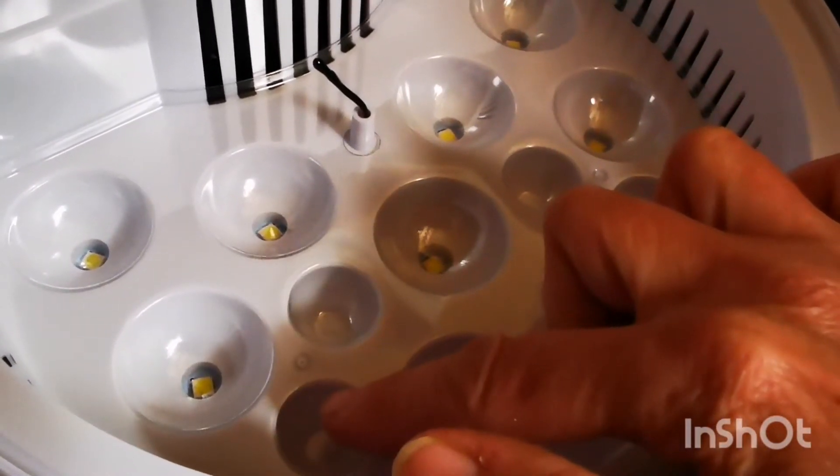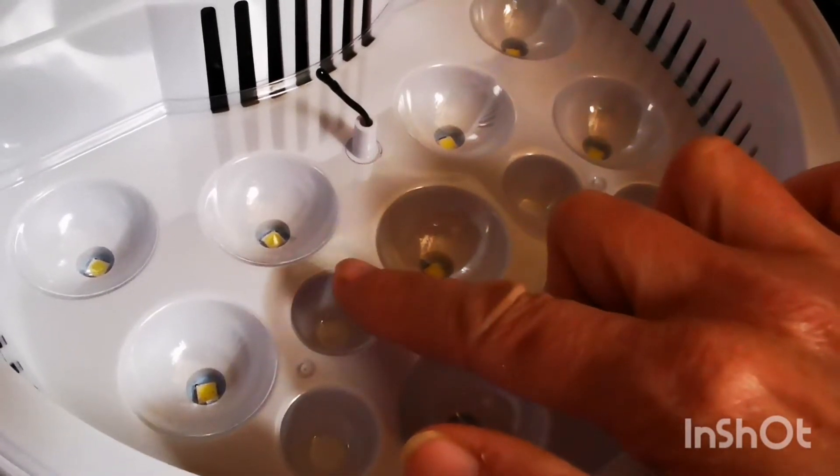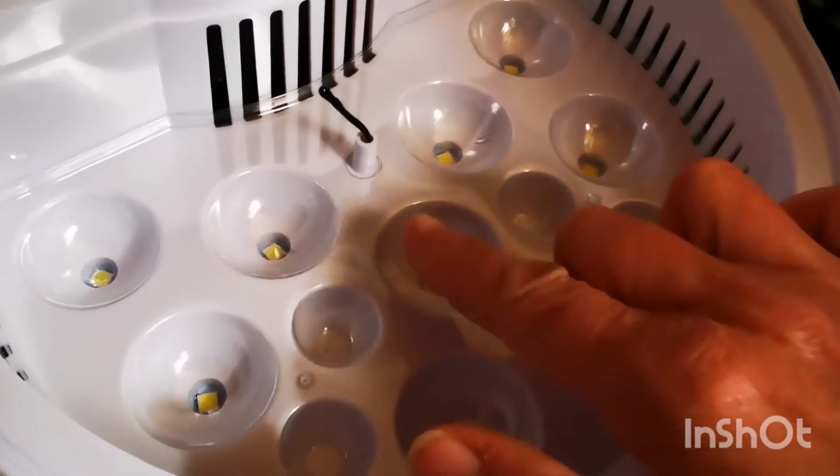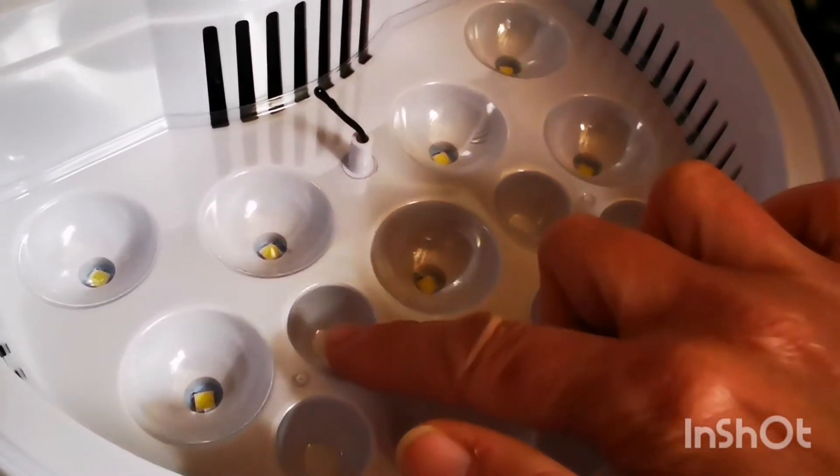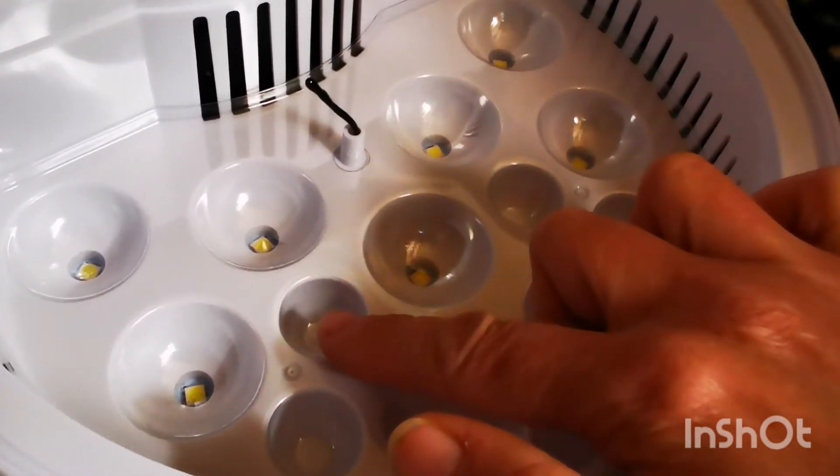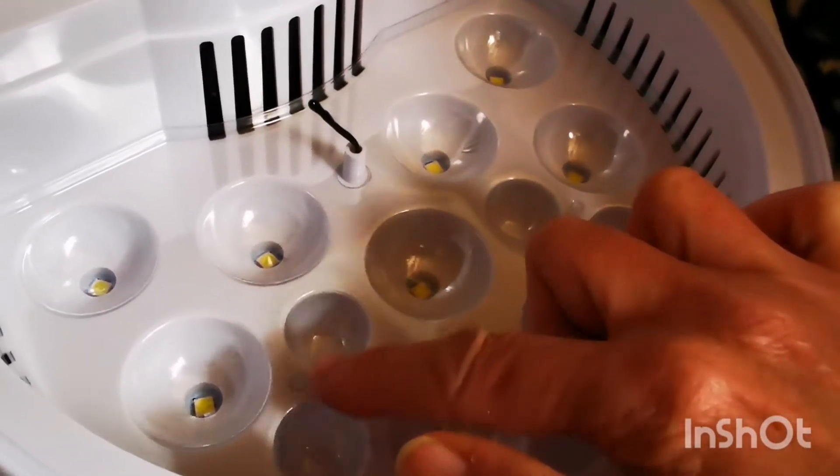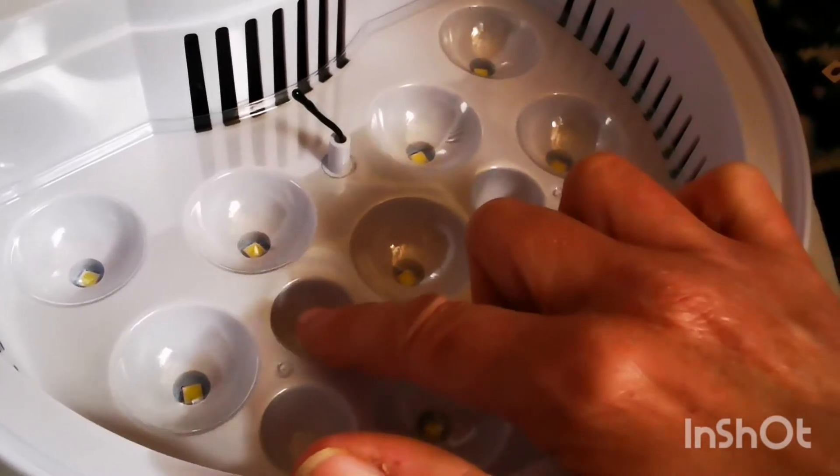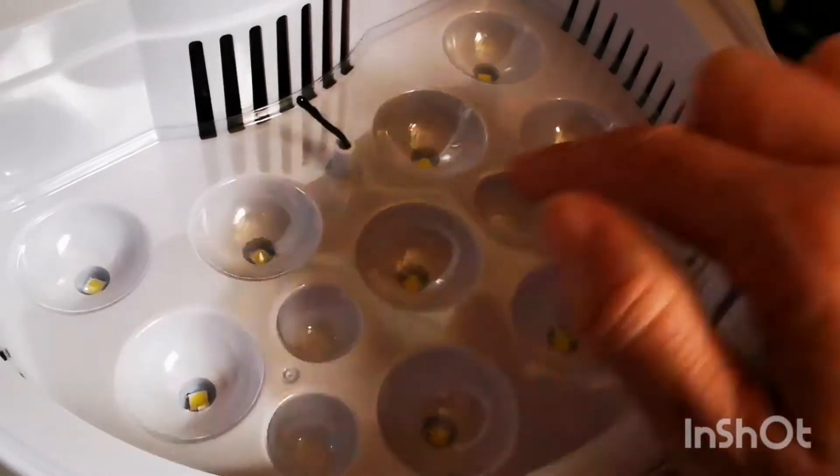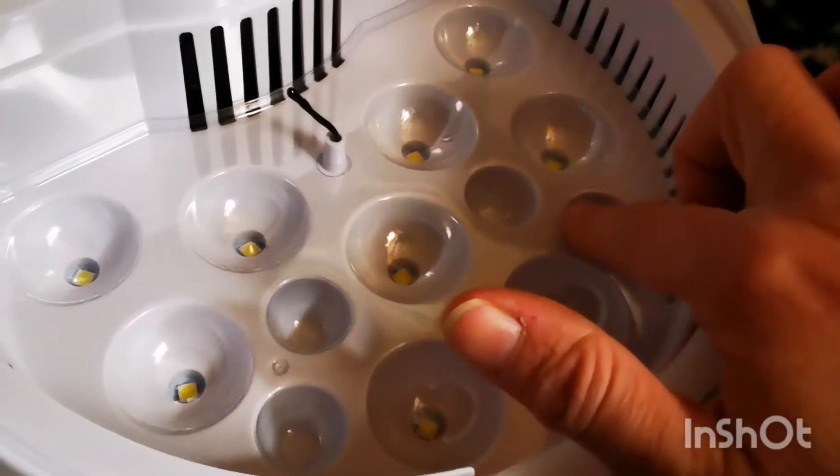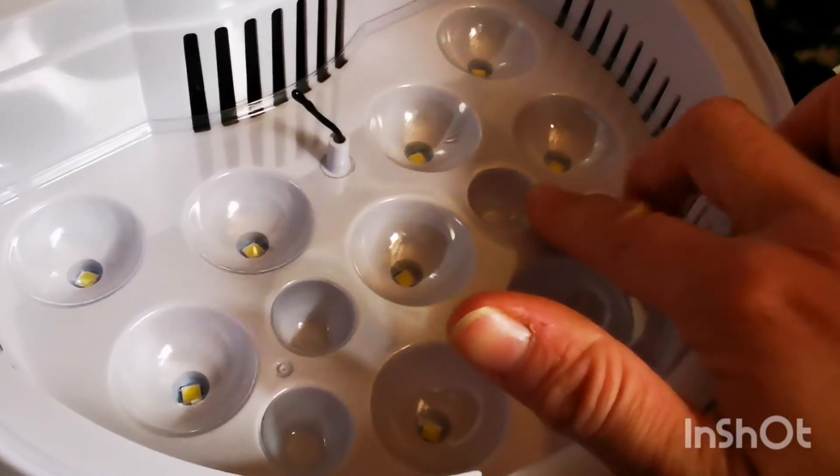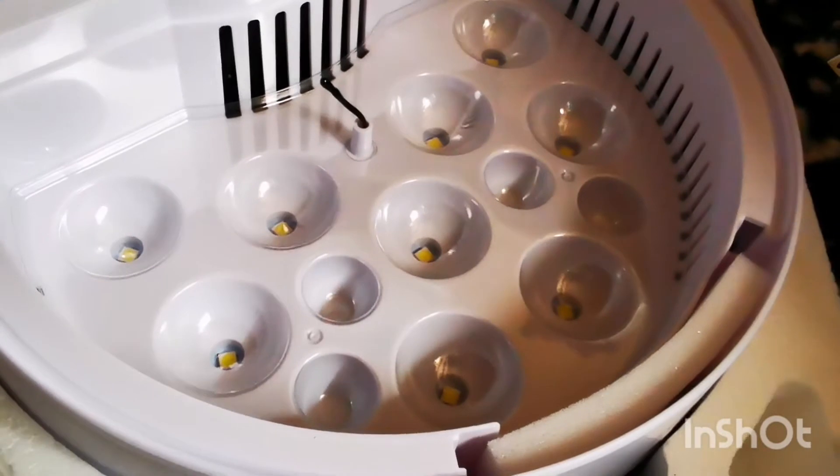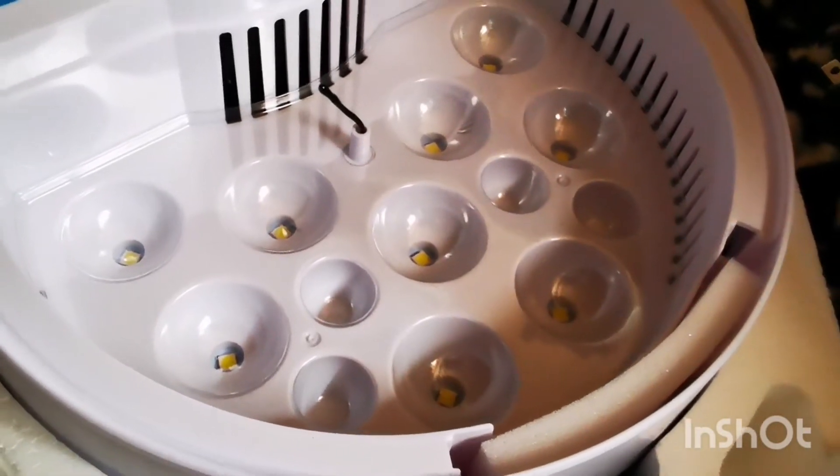But there's a video, I'll try to link it in my description, where they hatched quail and one of the little quail drowned in there before they could get it out. So you might want to put a little stone in there, little pebbles or something to prevent them from accidentally drowning, especially if you have quail. They can be small and a little bit weak. They might not be able to pull their head out very good.